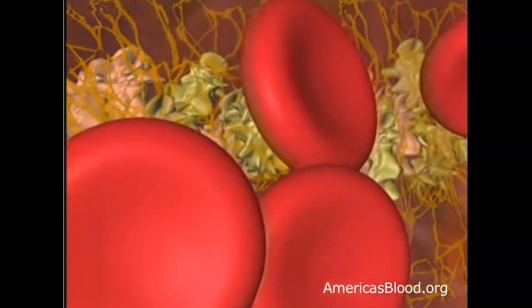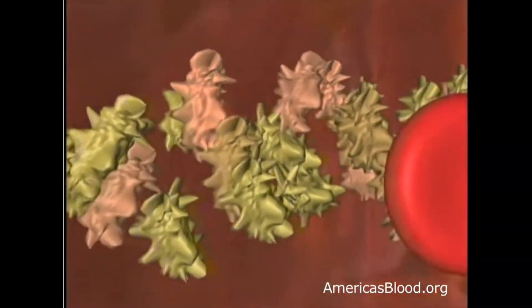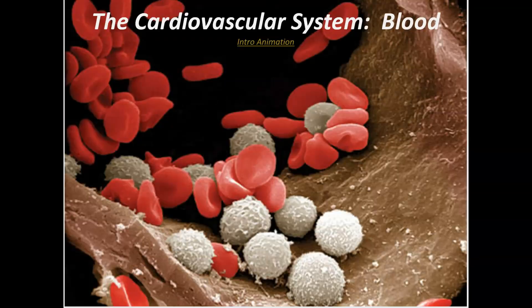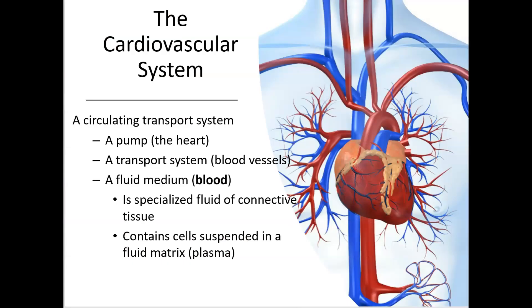When the wound is completely healed by new cells growing over it, the clot will be cleared away and blood will begin to flow through the vessel normally. The cardiovascular system has three main components: the pump, which is the heart; the pipes, which are the blood vessels; and the blood.